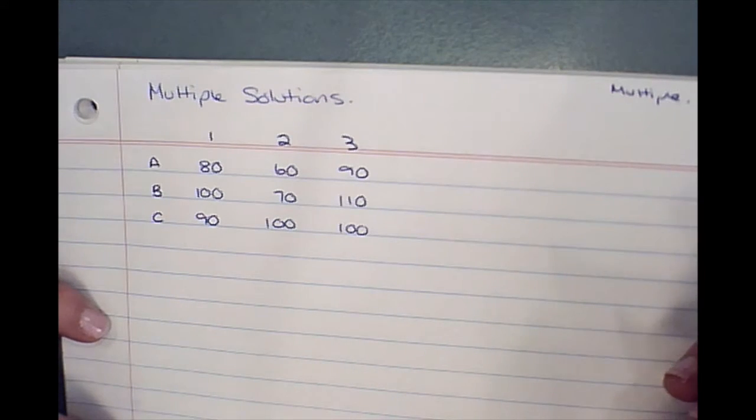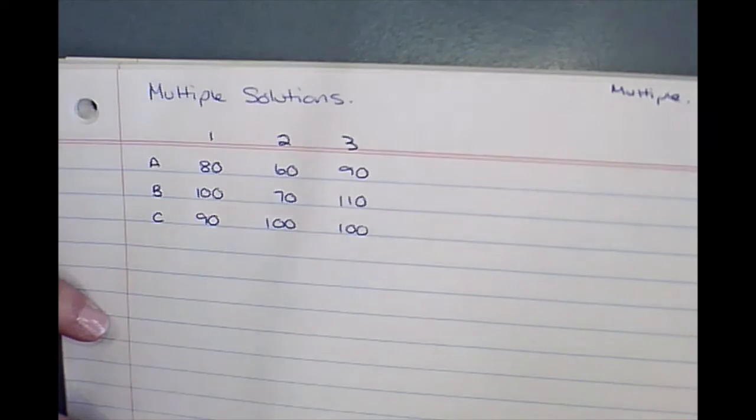Okay, in this version of the Hungarian algorithm, we're going to look at what happens when we have multiple solutions that are presented to us. So we're just going to go through the process and it won't be until the end that there's anything different.